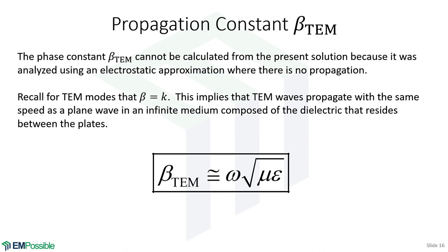The propagation constant β didn't appear explicitly in the TEM analysis. From the previous lecture, TEM modes have β equal to the wave number k, which means the cutoff frequency is zero and the wave speed equals the plane-wave speed in the dielectric. So β = ω√(με) for the TEM mode.